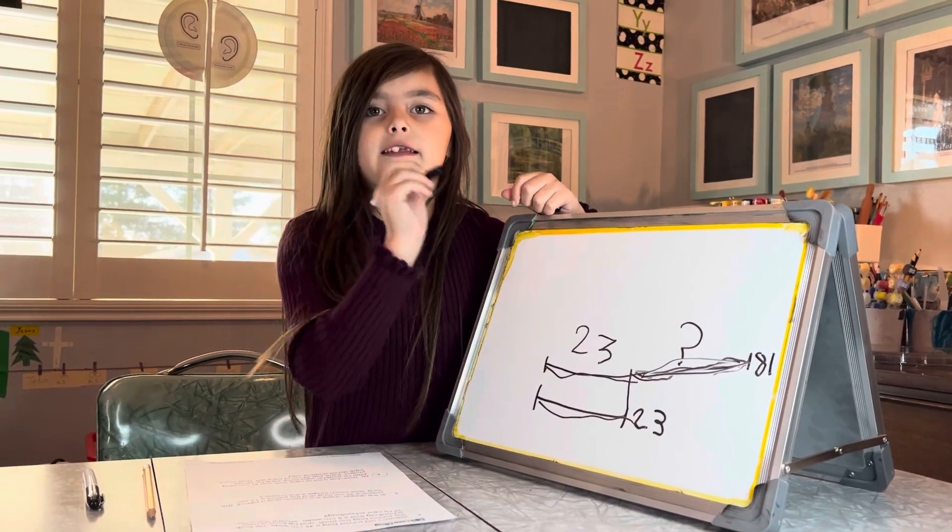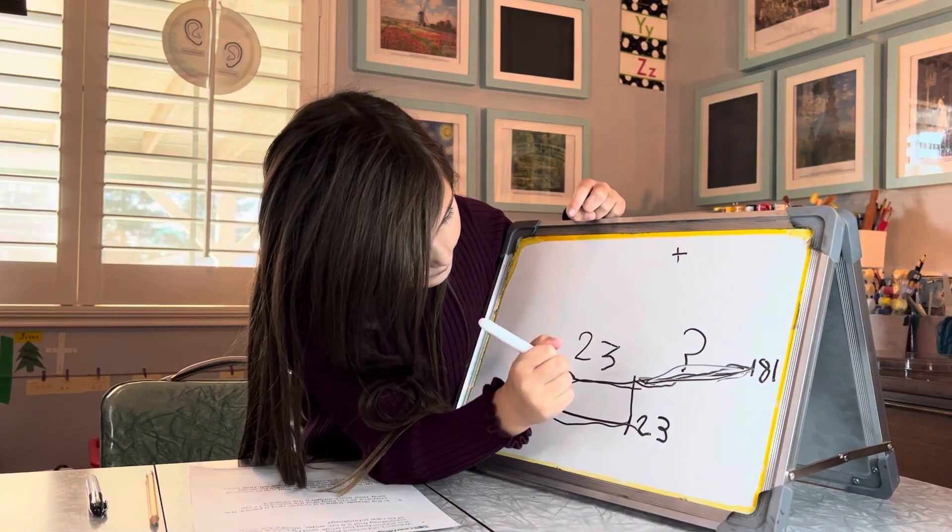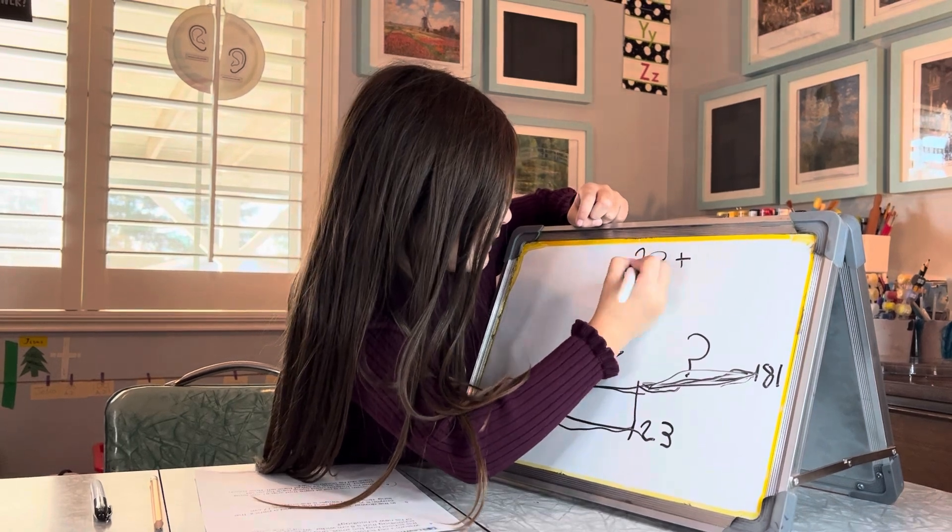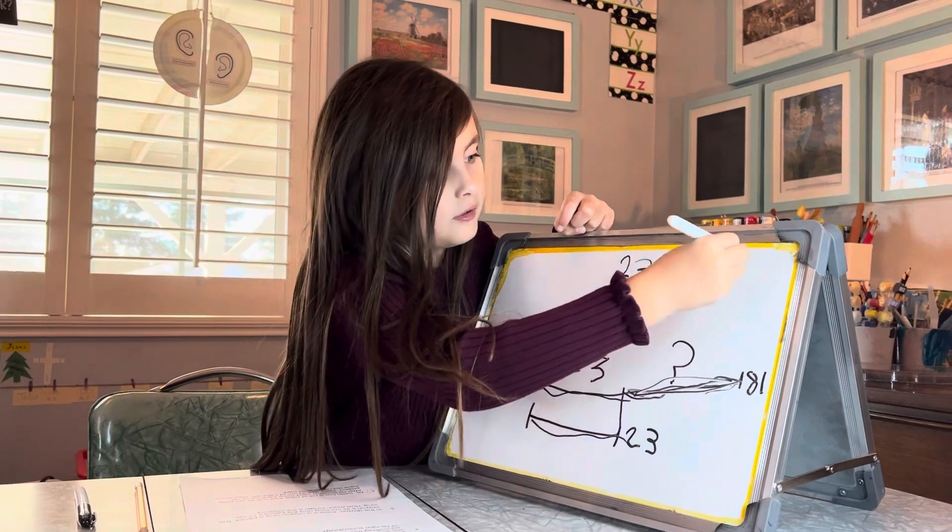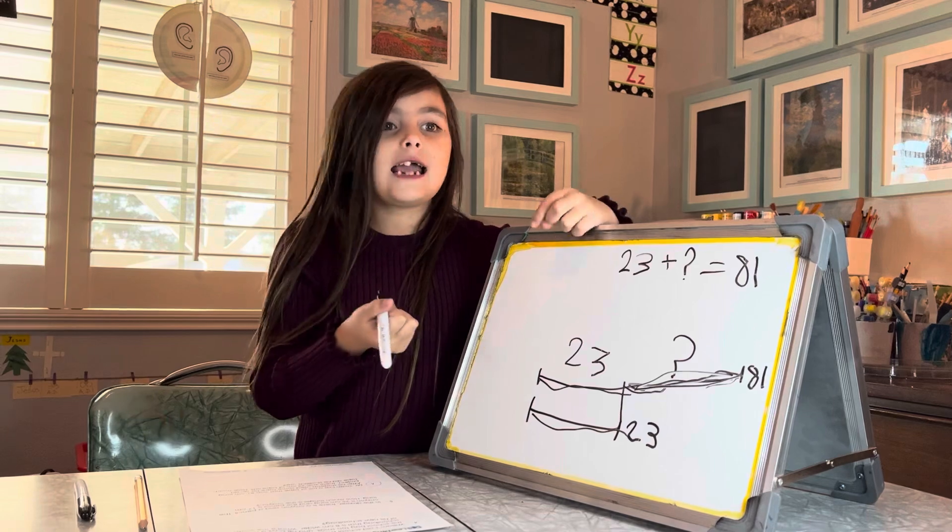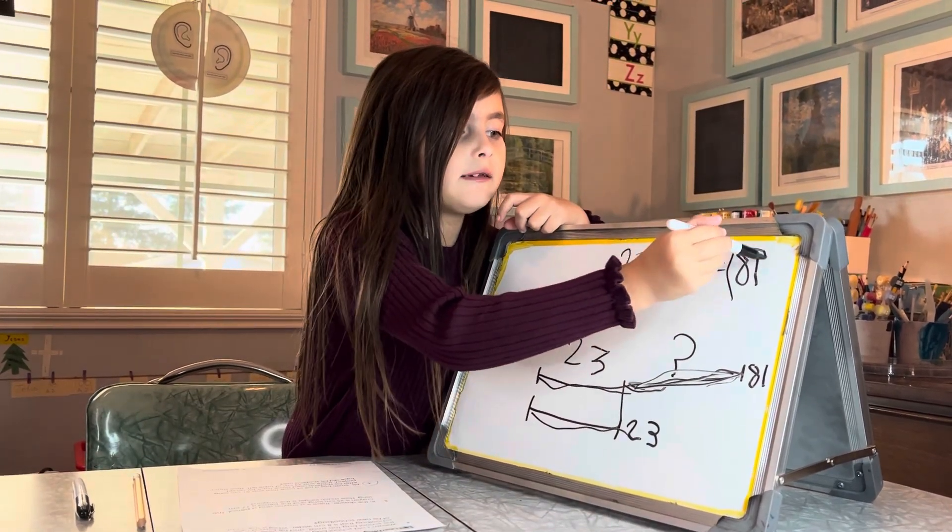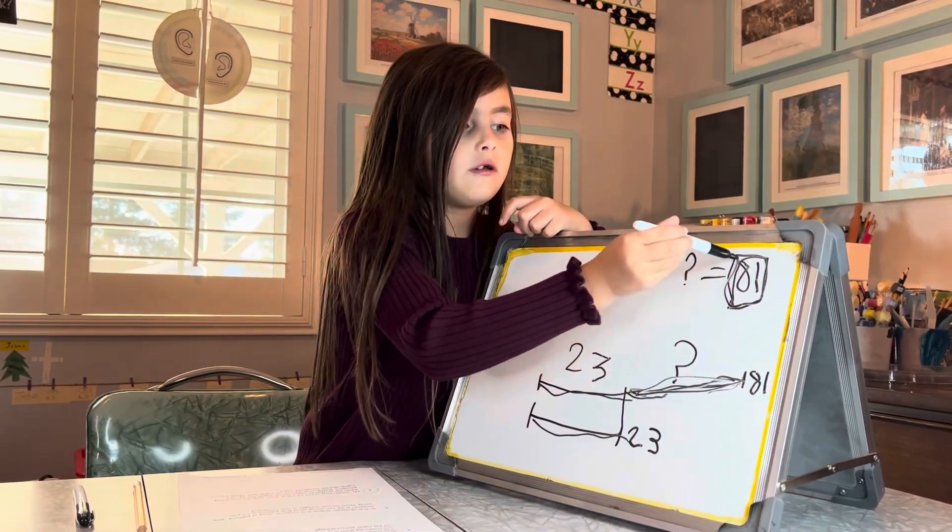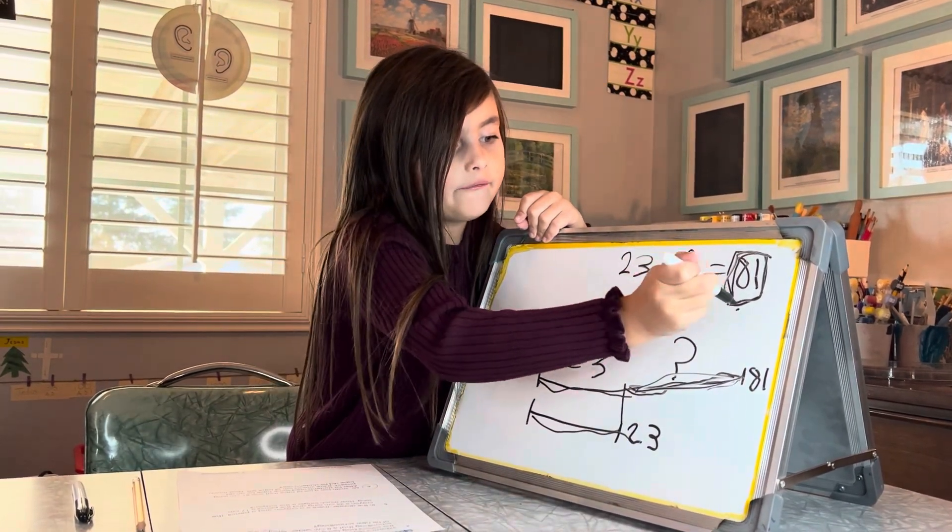Let's see. 23 plus mystery number equals 81. Oh, and before I do the next plus problem, I have to tell you why the big numbers go here. Well, we put the biggest number here because in plus, we put the biggest number at the very, very end.